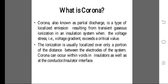What is Corona? Corona, also known as partial discharge, is a type of localized emission resulting from transient gaseous ionization in an insulation system when the voltage stress, i.e., voltage gradient, exceeds a critical value. The ionization is usually localized over only a portion of the distance between the electrodes of the system. Corona can occur within voids in insulators as well as the conductor or insulator interface.